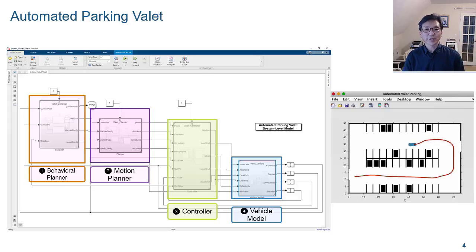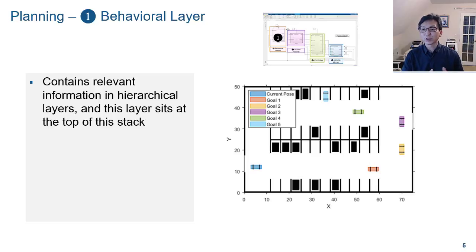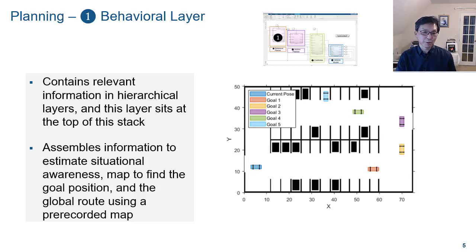Let's take a look at each individual component. The behavior layer is responsible for activating and managing different parts of mission planning by supplying a sequence of navigation tasks. This behavior layer assembles information from other parts of the system, such as the environment model used to estimate situational awareness.